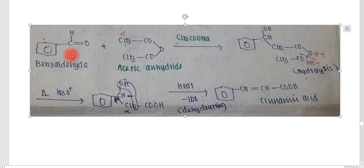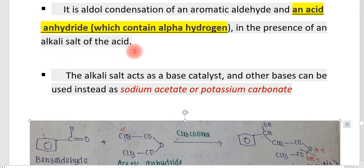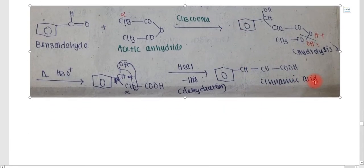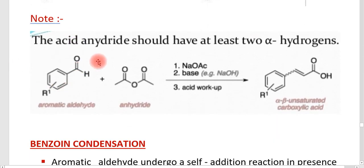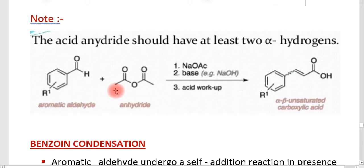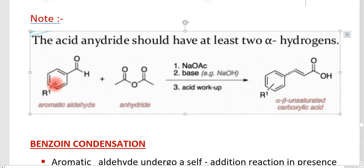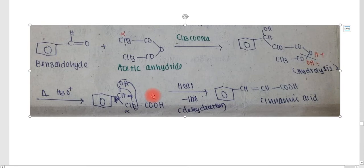In summary, the Perkin condensation involves an aromatic aldehyde and acetic anhydride in the presence of an alkali salt of an acid, giving cinnamic acid as the product. An important condition is that the acid anhydride must contain at least two alpha hydrogens. In the acetic anhydride example, it definitely has more than two alpha hydrogens, as it is attached to the CH₃ group.